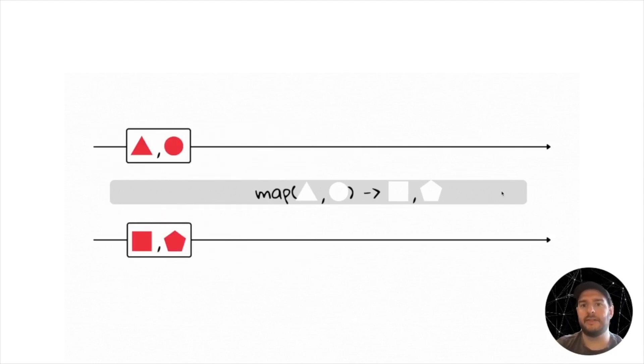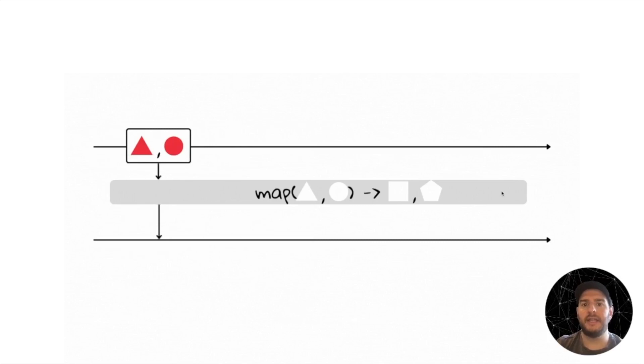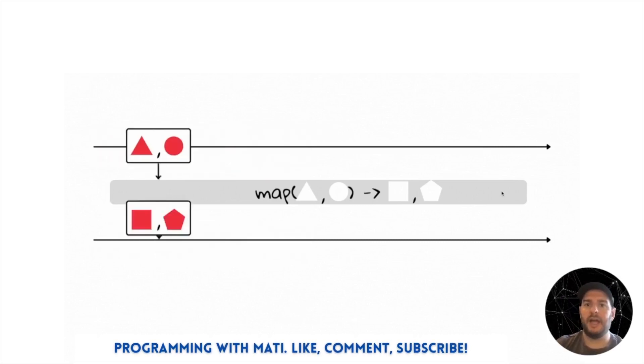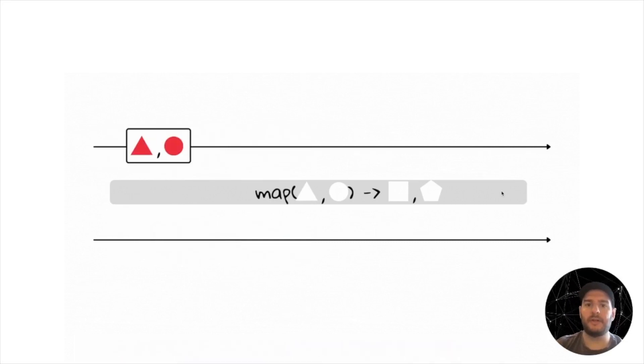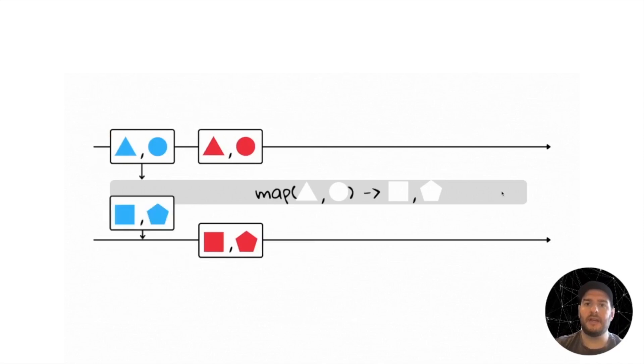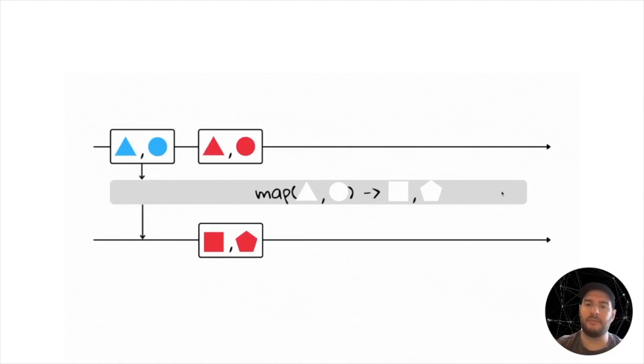This is a stateless operation. But because it can change the value of the key, this will trigger a repartition. And this is something we want to avoid. Because triggering a repartition in Kafka Streams means creating an internal topic in which the data will be redistributed among all the different Kafka Streams applications.